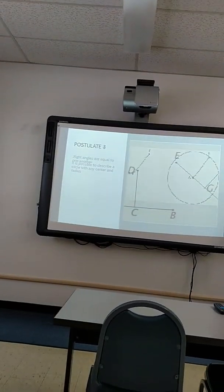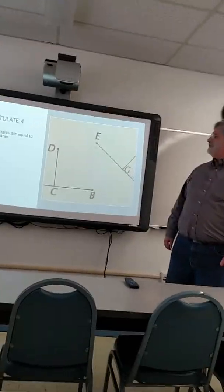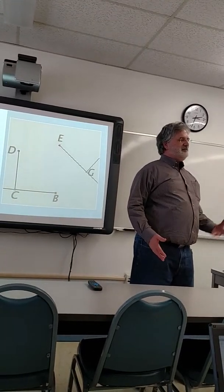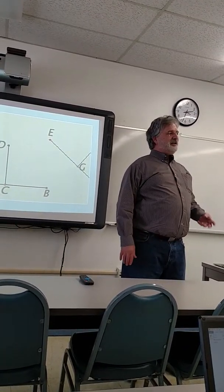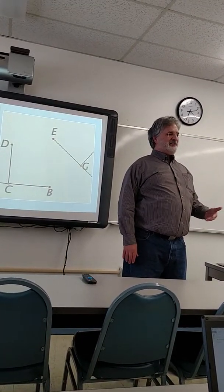I kind of like this. I know it works. Postulate four: right angles are equal to one another. I have no idea how he went about proving it, but in Euclid's Elements there's a proof that right angles are equal to one another. We would just think, okay, it's 90 degrees, it's 90 degrees, so they're going to be equal.